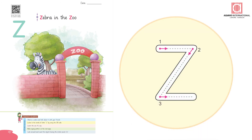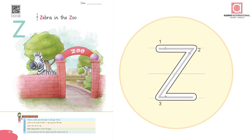Say and trace the letter Z with a finger. Start at the top. Draw a straight line to the right, a diagonal line down, then another straight line to the right. Yes, this is how you write it.